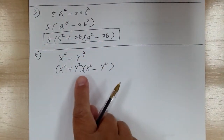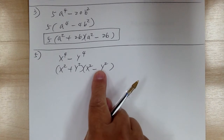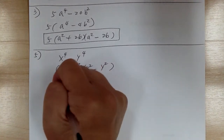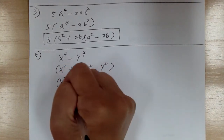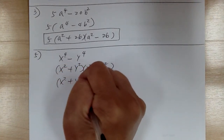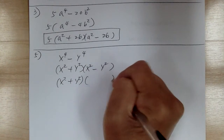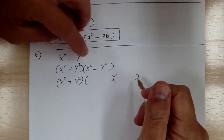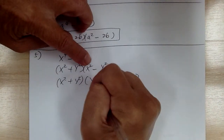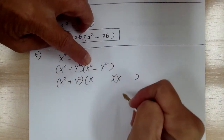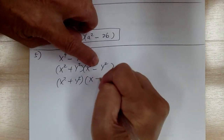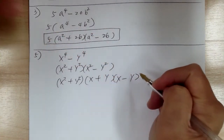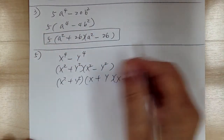But don't stop here. Notice you have the difference of squares again. So you have to do this one again. Get two sets of parentheses. To get this, you need x and x, plus and minus, and y and y. And that's it.